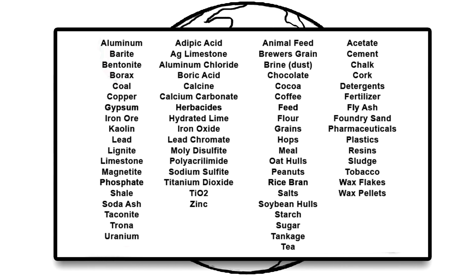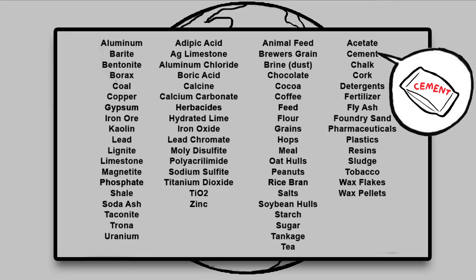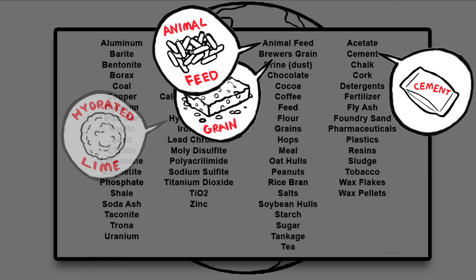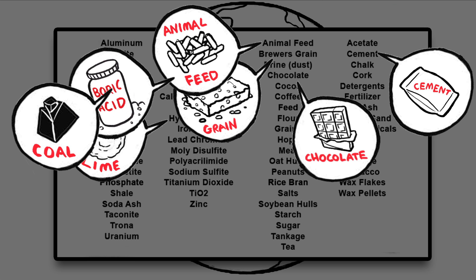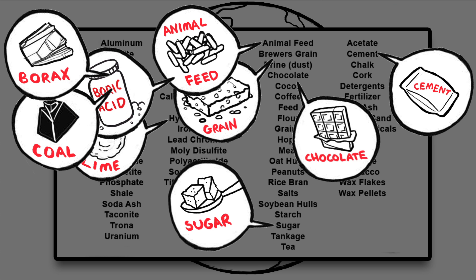Look at all the materials I already keep flowing every day. Cement, brewer's grain, animal feed, hydrated lime, chocolate, boric acid, coal, borax, sugar. The list goes on and on.